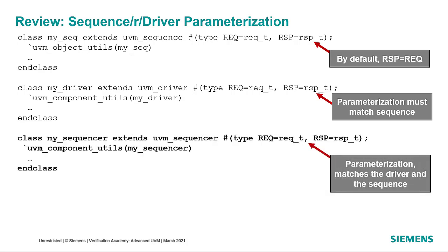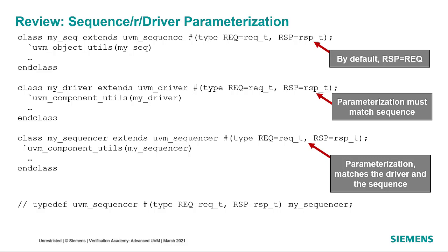The sequencer is a different story. Since all it does is execute the sequence, you won't have to worry about overriding it, but we still register it with the factory to ensure it shows up when you print the hierarchy of your test bench. In some older UVM material you may see the sequencer declared with a typedef. Notice that the parameterization of the user-defined type must still match the sequence and the driver. We recommend using the class declaration instead, since the typedef wouldn't show up in the UVM hierarchy.